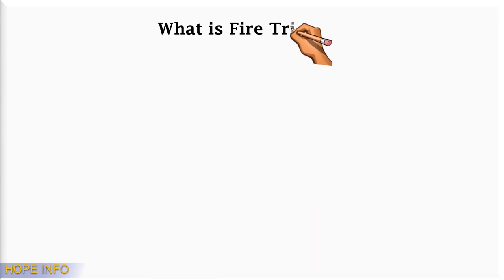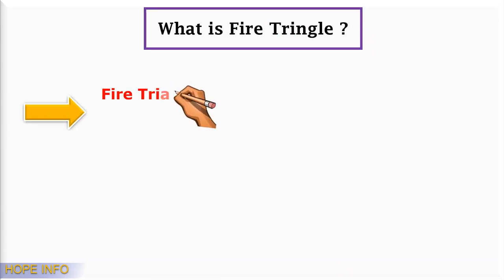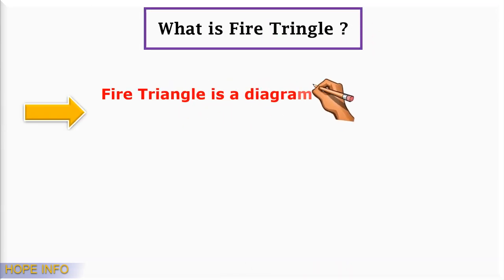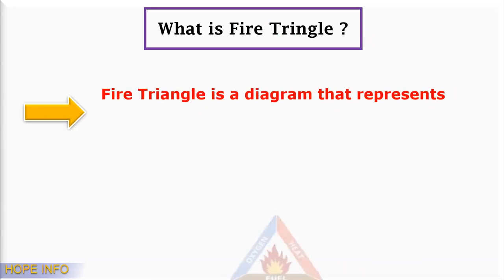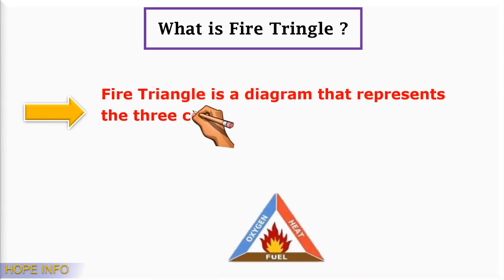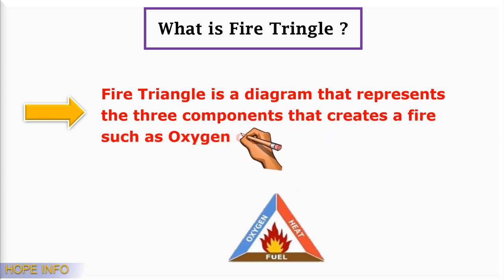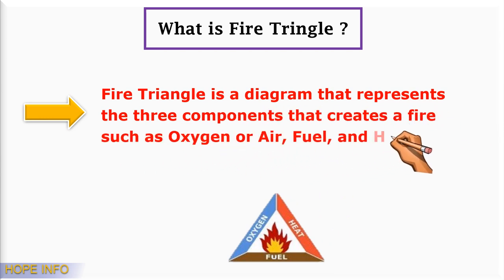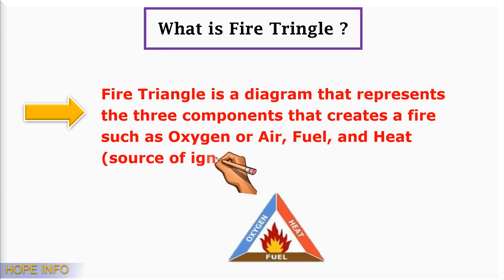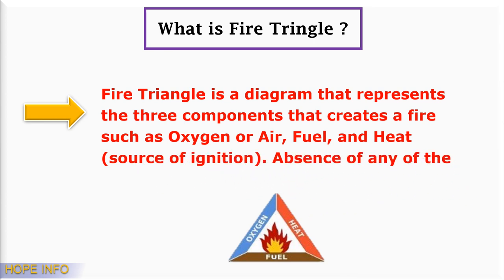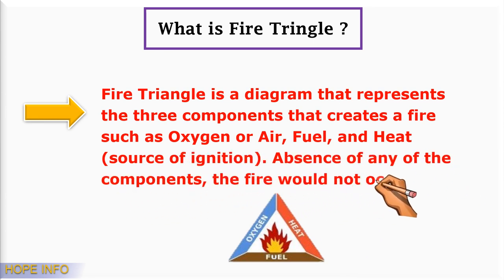What is the fire triangle? The fire triangle is a diagram that represents the three components that create fire: oxygen or air, fuel, and heat or source of ignition. In the absence of any one of these components, the fire will not occur.